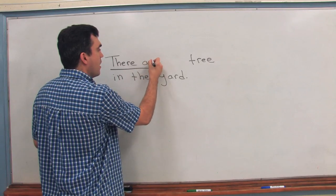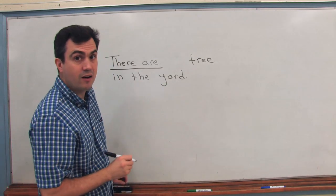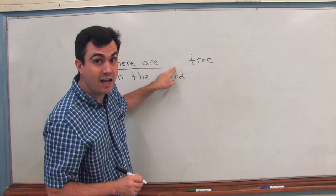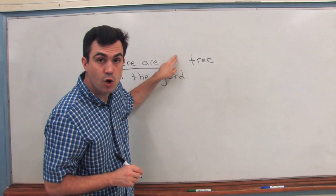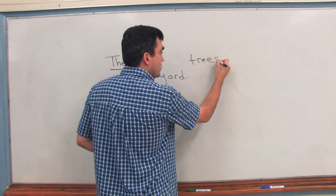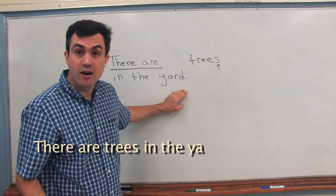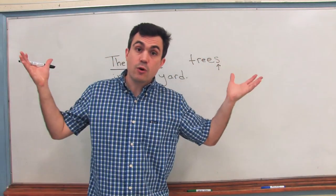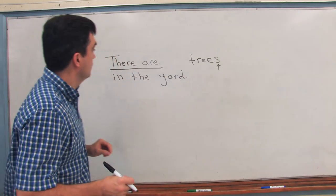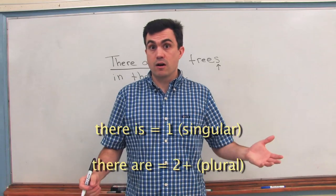'There are.' 'Are' is plural — A-R-E. 'There are.' No 'a' because 'a' and 'an' are singular, so no article. Tree — let's make this plural: trees. 'There are trees. There are trees in the yard.' We don't know how many, but we know it's plural — two or more. So, 'there is' is singular, 'there are' is plural.